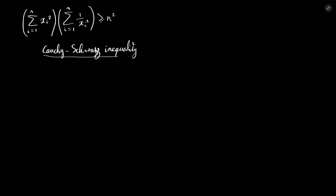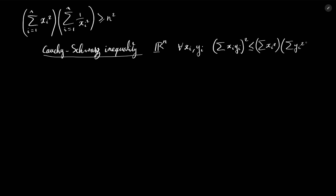The Cauchy-Schwarz inequality can be written the following way. When you are in the space Rn — the n-dimensional space of real numbers — for any set xi and yi, you can write that the sum of xi·yi, squared, is less than or equal to the sum of xi squared multiplied by the sum of yi squared.